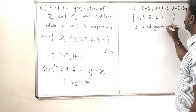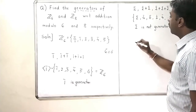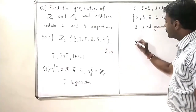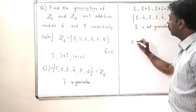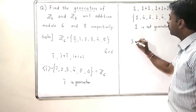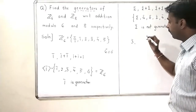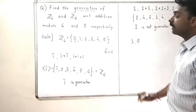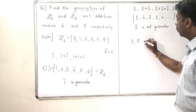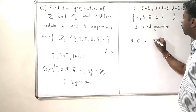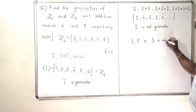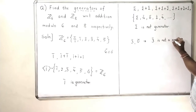Similarly for 3 bar: 3 bar generates 3 bar, and 3 bar plus 3 bar is 6 bar which is 0 bar. So 3 bar will generate only 3 bar and 0 bar. This means that 3 bar is also not a generator of Z6.